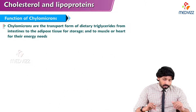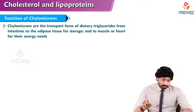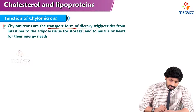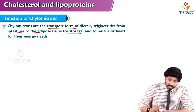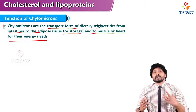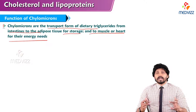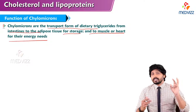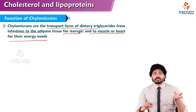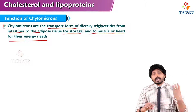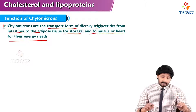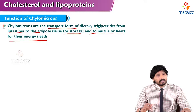This is the overview of chylomicron metabolism. The function of chylomicrons: chylomicrons are the transport form of dietary triglycerides from the intestine to adipose tissue for storage and to muscle or heart for energy needs, because continuous muscle contraction requires energy. Whatever glycogen or glucose is available is not sufficient, so free fatty acids undergo beta oxidation to enter the TCA cycle to produce energy. For that purpose, chylomicrons transport triglycerides from the intestine to these extrahepatic tissues. That's all about chylomicron metabolism.